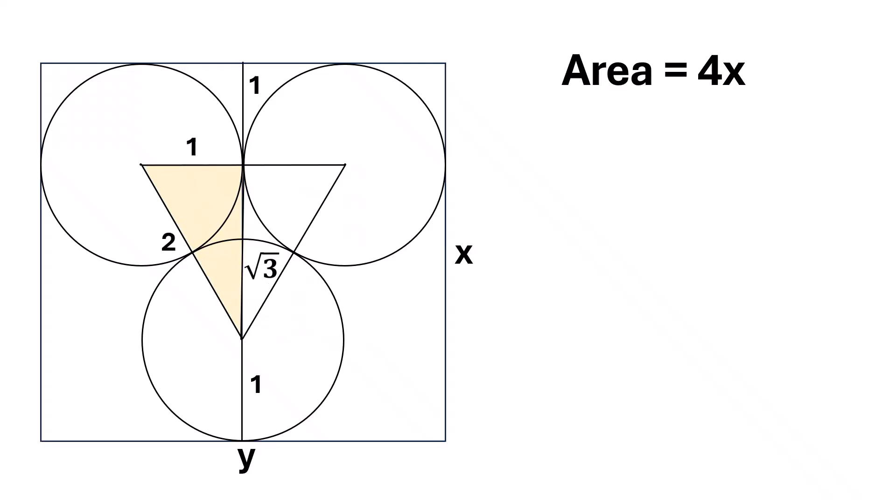The length of x is the same as the total length of these three parts: this one, this square root of 3, and this one. So x is equal to 1 plus the square root of 3 plus 1. That means the value of x is 2 plus the square root of 3.